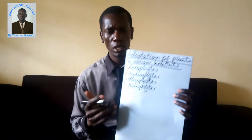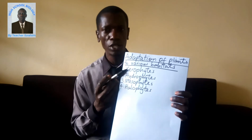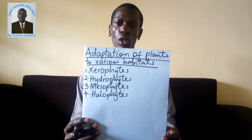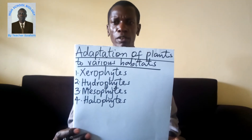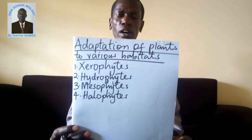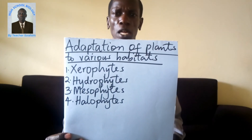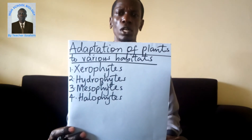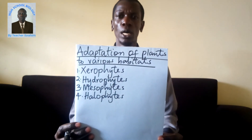Plants are categorized into four types based on the habitat which they have inhabited. Those four types are: xerophytes, hydrophytes, mesophytes, and halophytes. Xerophytes refer to those plants that grow in dry areas with no or a small amount of water.